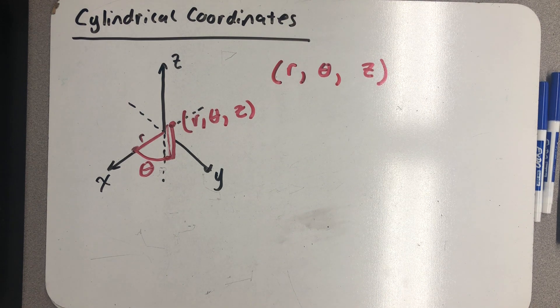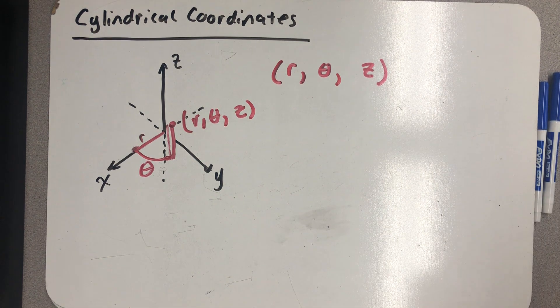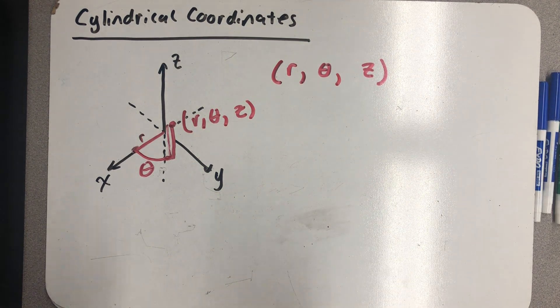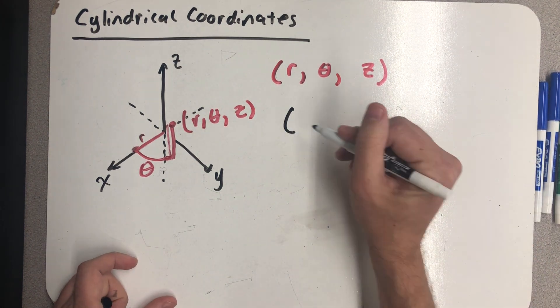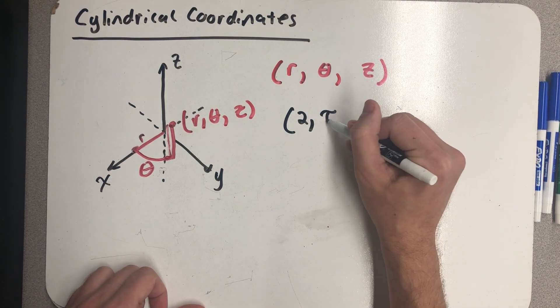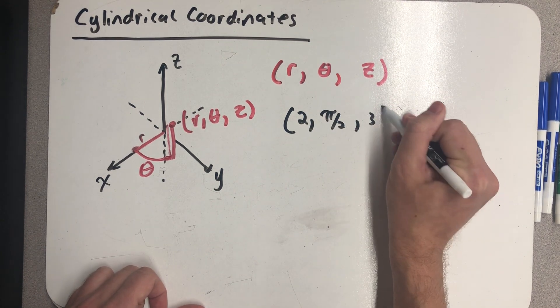So let's plot a point in cylindrical coordinates and then we'll write down a few relationships between rectangular and cylindrical coordinates. Let's plot the point 2, pi halves, 3.